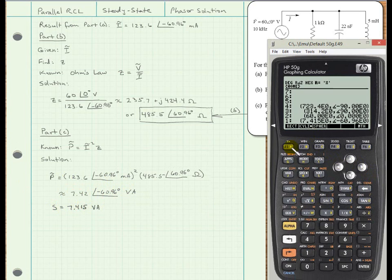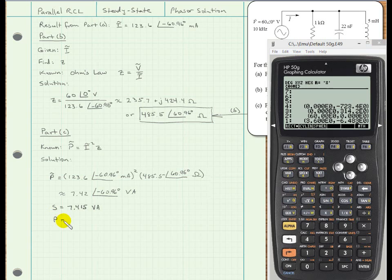So if I convert that to rectangular coordinates, then I can get the true and the reactive power, and I can draw my power triangle. So I convert to rectangular coordinates and I see that the power, the true power or real power, is 3.6 watts, and the reactive power is negative 6.483 volt-amps reactive. The negative sign just reminds me that the circuit is acting inductively.